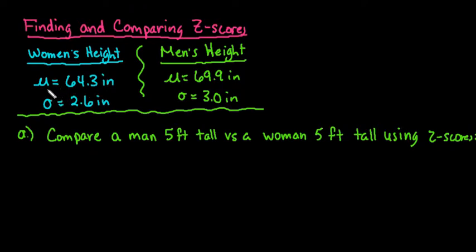With this, we have that mu is equal to 64.3 inches for women and the average men's height is 69.9 inches. Notice that the men's height has slightly more variability since it has a standard deviation of 3 inches. The larger the standard deviation is, the more variability in the actual data. Women have a standard deviation of 2.6 inches.